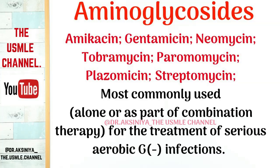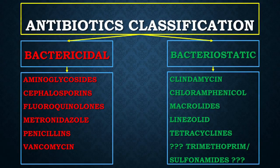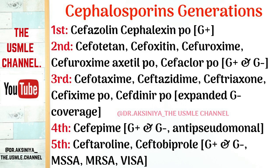The next group from our bactericidal list is the cephalosporin generations — we have five generations. In the first generation we have cefazolin and cephalexin. In the second generation: cefotetan, cefoxitin, cefuroxime, and cefaclor. In the third generation: cefotaxime, ceftazidime, ceftriaxone, cefixime, and cefdinir. In the fourth generation: cefepime. In the fifth generation: ceftaroline.